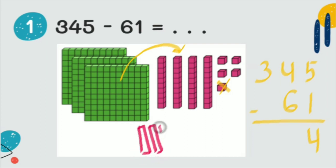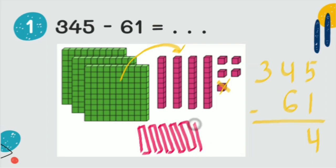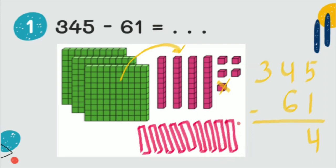I draw ten more tens — counting up to ten. Now we regroup: we have fourteen tens here. I write fourteen tens, and we have only two hundreds left, because we already took one hundred into tens.